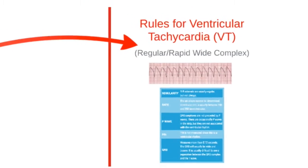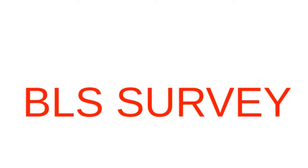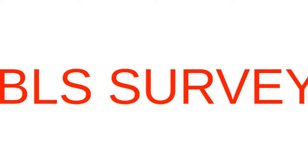Despite their differences in ECG rhythms, the ACLS management of VF and VT are essentially the same. An AED analyzes the rhythm and determines if a shock is needed. An AED does not know if the patient has a pulse or not, which is why you as a provider must be able to read the rhythm.